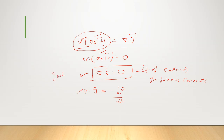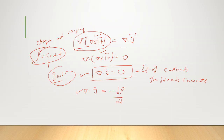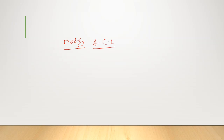Ampere's circuit law is valid if ρ equals a constant — that is, if the volume charge density is not varying with respect to time. But if charges are varying with respect to time, Ampere's circuit law is inconsistent; it is not valid. This is the reason that led Maxwell to modify Ampere's law, resulting in what is known as Maxwell's fourth equation.